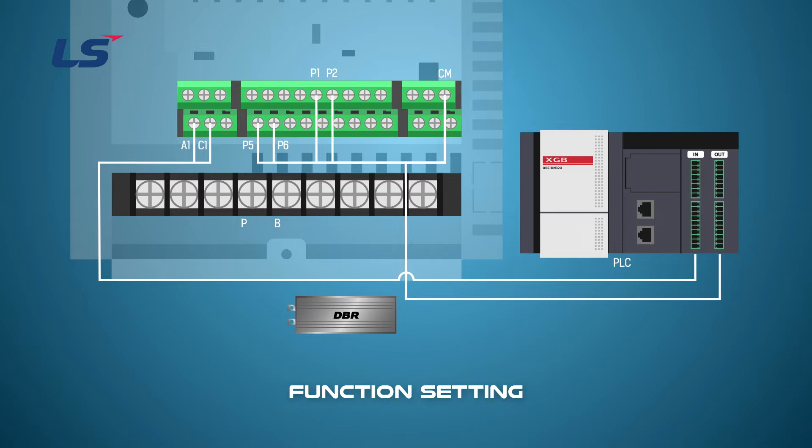In the case of IS7, the brake unit is not built in from 30 kW or more, so please check the inverter capacity and attach the brake resistor after installing the brake unit.